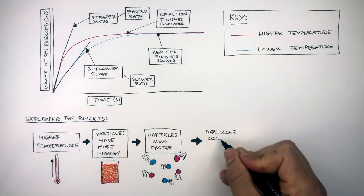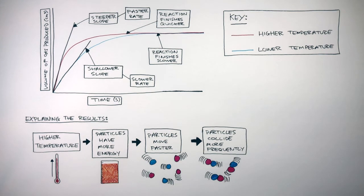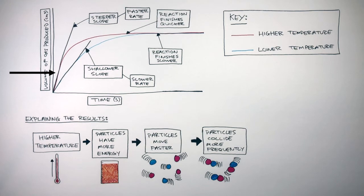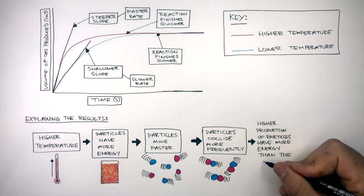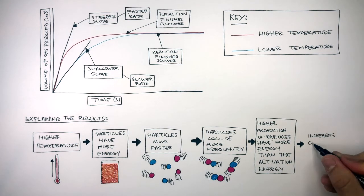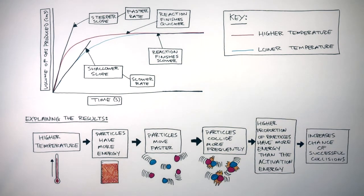Therefore, the particles collide more frequently, increasing the chance of successful collisions. This is why the initial rate of reaction is faster, as shown on the graph. As the particles are moving faster due to the increase in energy, they collide more frequently and have a higher chance of successful collisions compared to the lower temperature particles. Not only this, but there is a higher proportion of particles which have more energy than the activation energy, which increases the chance of successful collisions when they do collide.